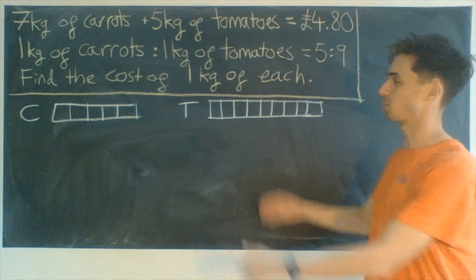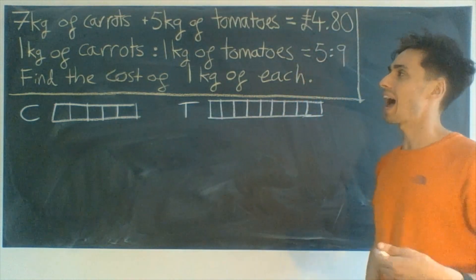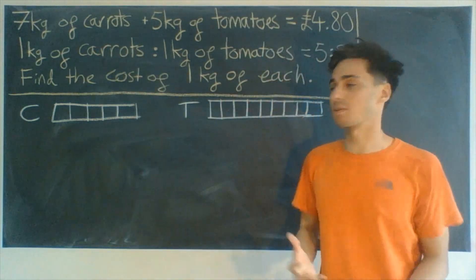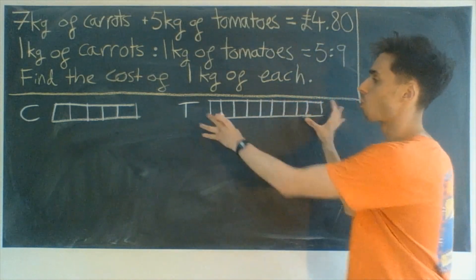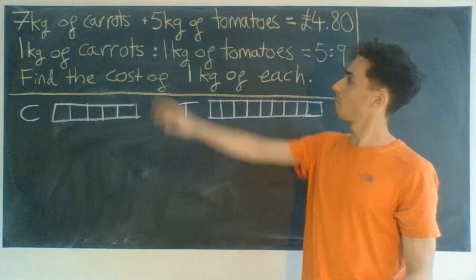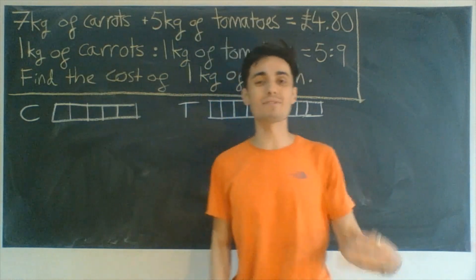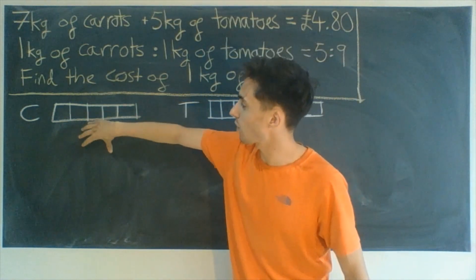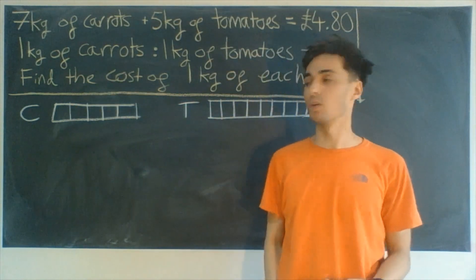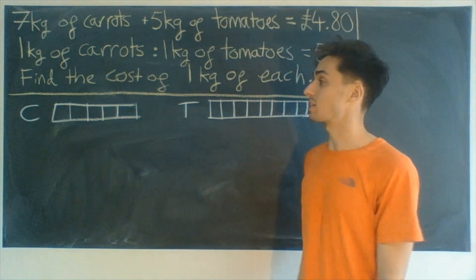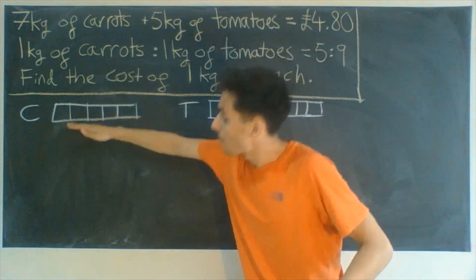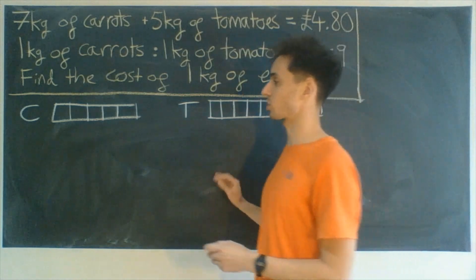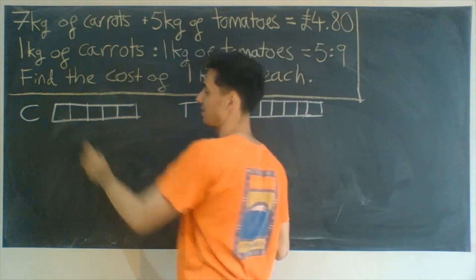Next we're going to use this information, because what these represent is 1 kilogram of carrots and 1 kilogram of tomatoes. If we use the top line, we've got 7 kilograms of carrots. So what we're going to do is take this 1 kilogram and multiply it by 7. The reason I love this method is it's so visual — you see the 1 kilogram multiplying by 7 to make an array. Let's see how that looks and extend this.